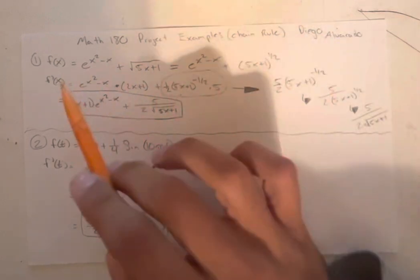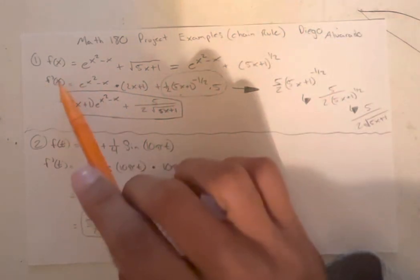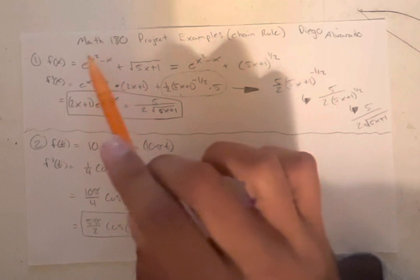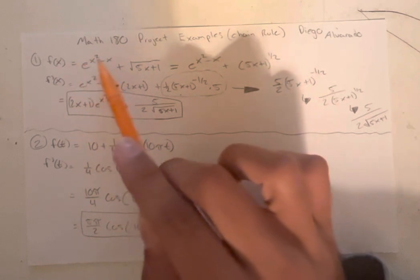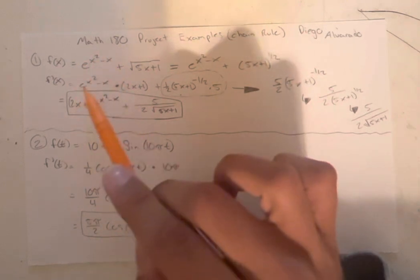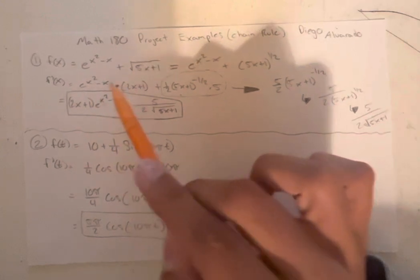So to go into the first derivative, we get f prime of x equals, we take the derivative of this one right here first, that e to the x squared minus x, which is just itself times the derivative of the inside function.